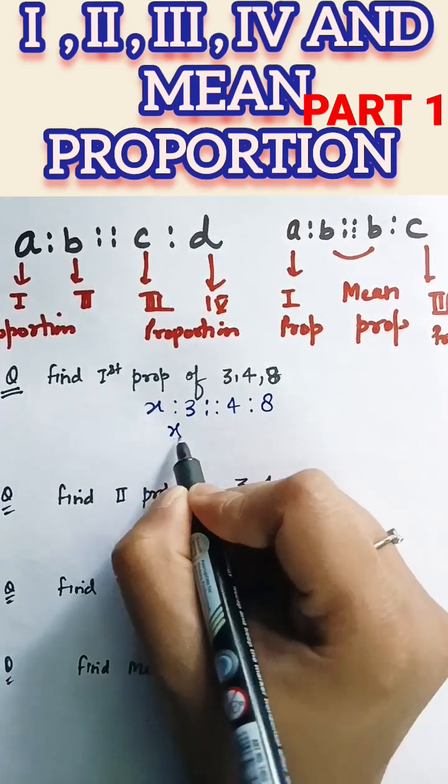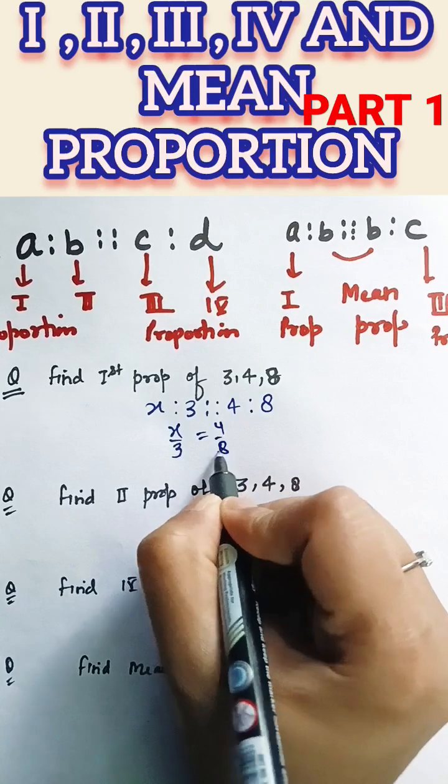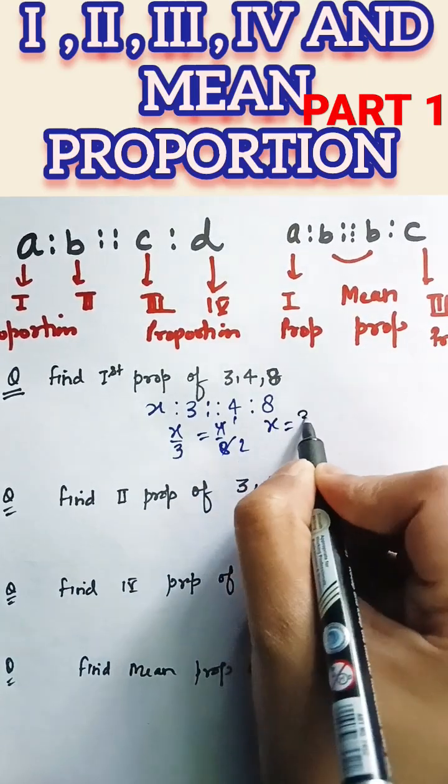So 4 ratio 8. So X by 3 equal 4 by 8. So X equal 3 by 2.